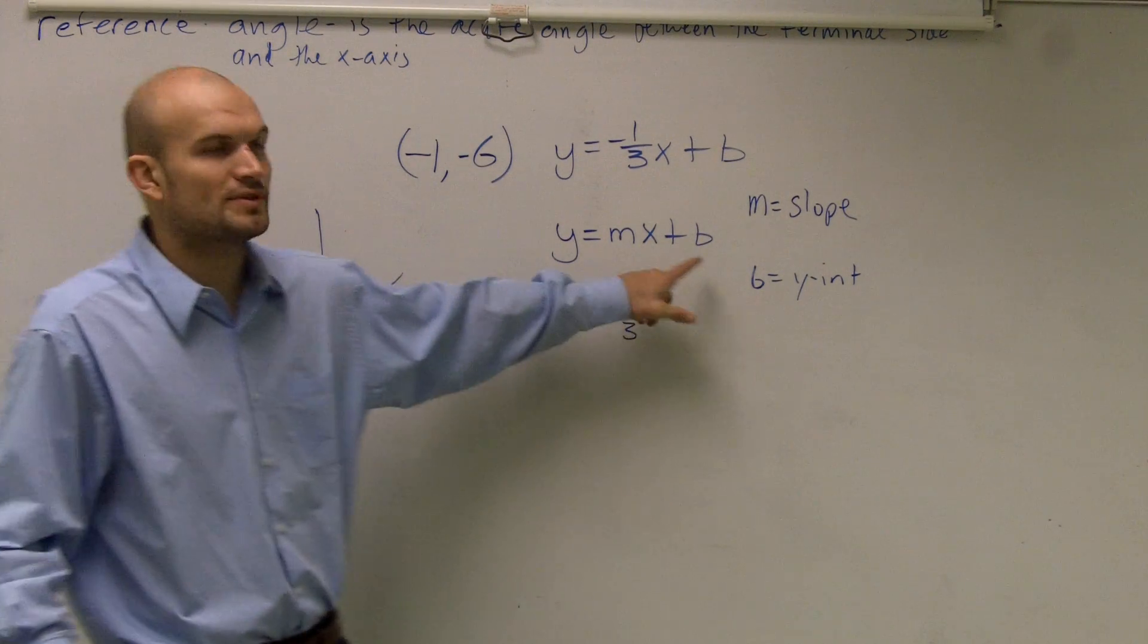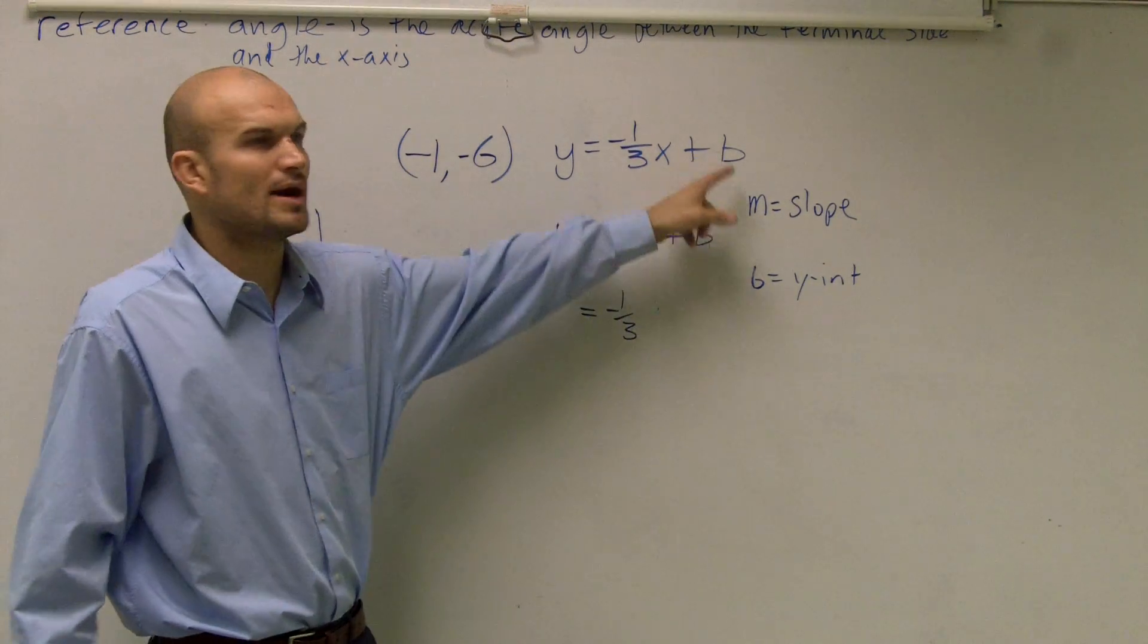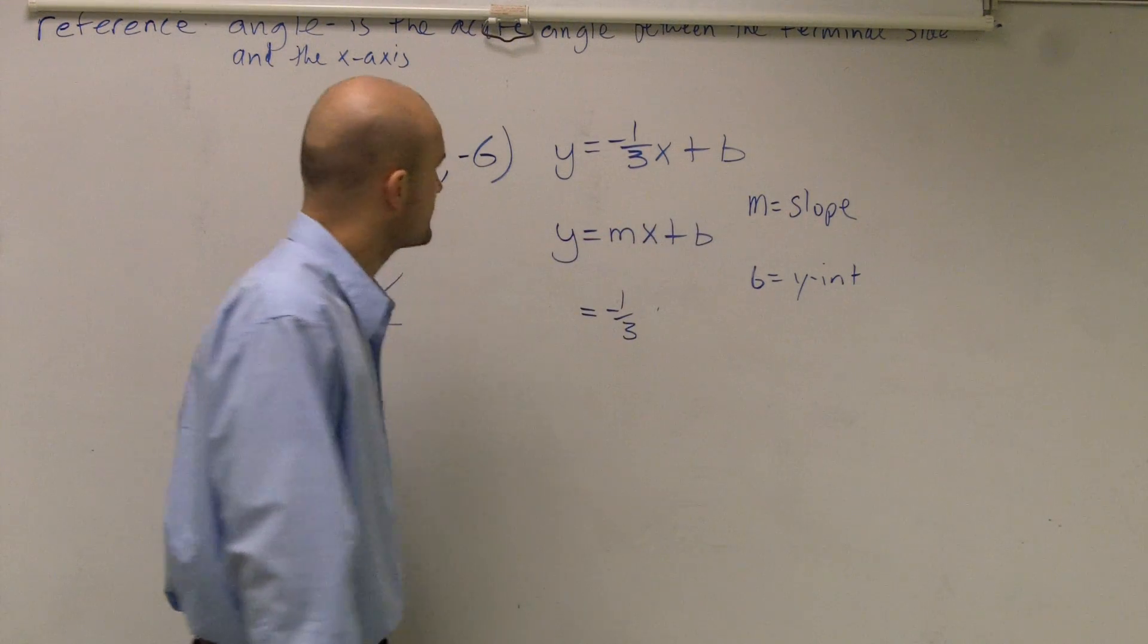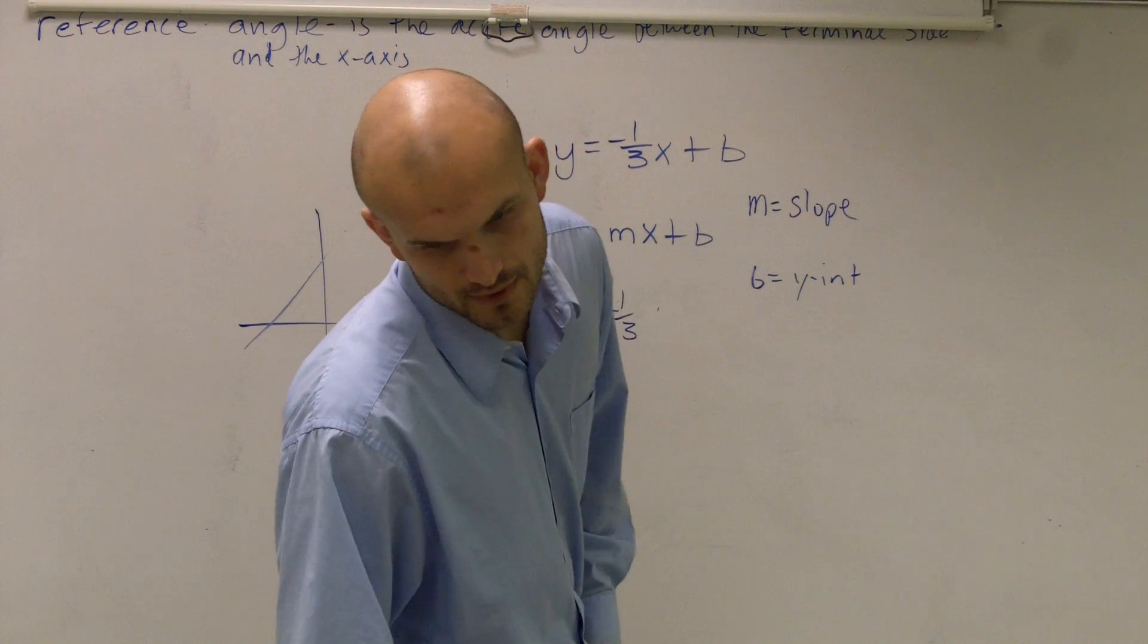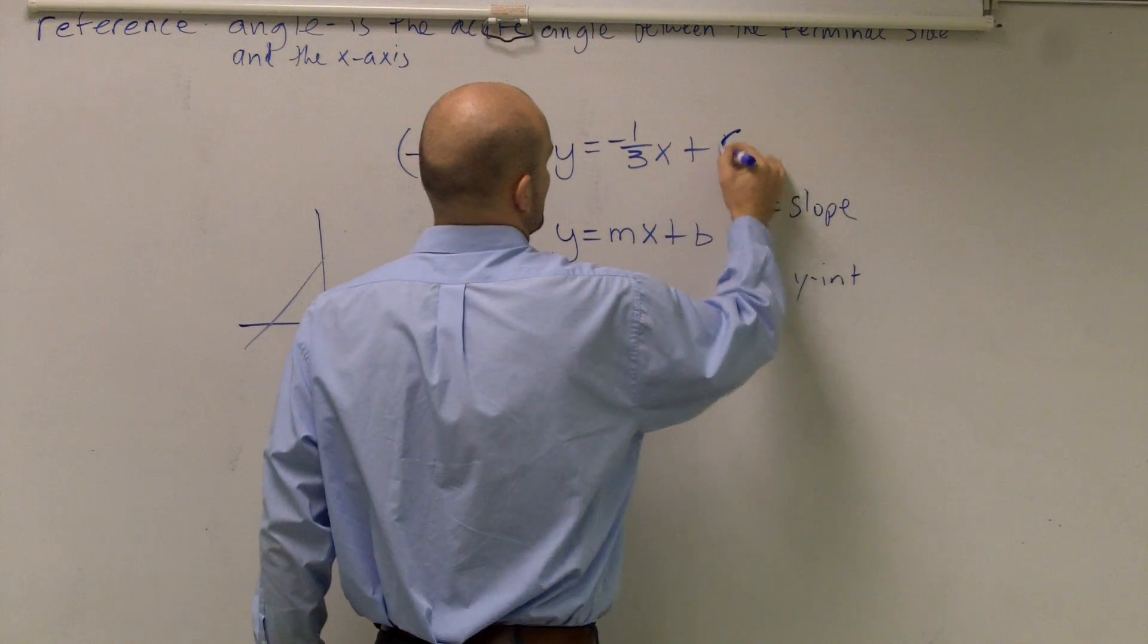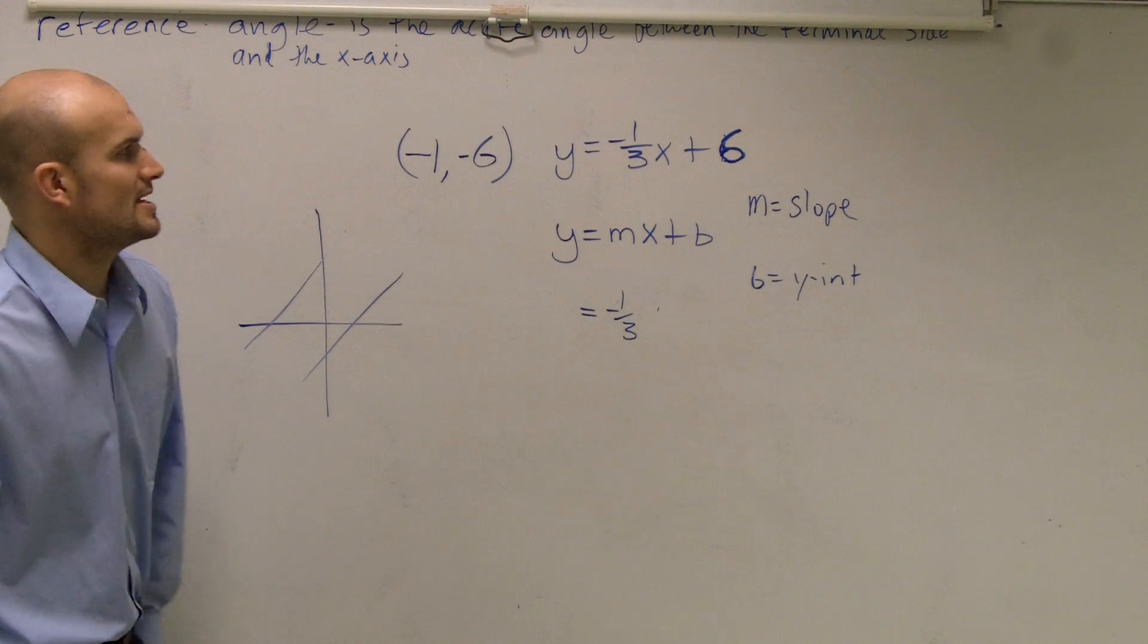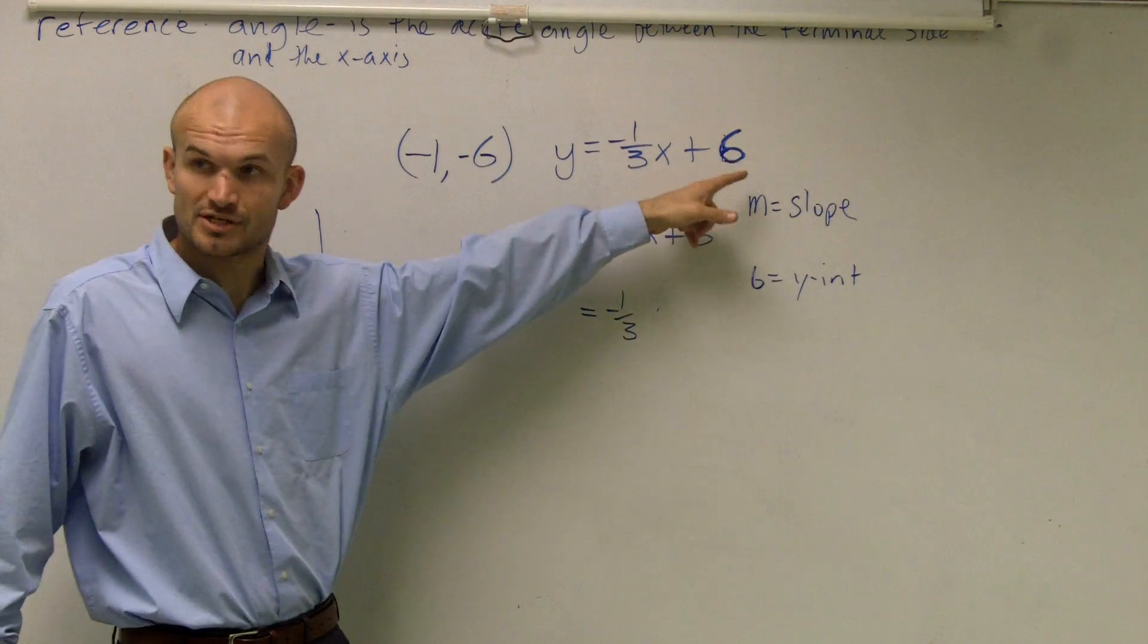Then the next thing is, do we know what the Y-intercept is? Now, this is where a lot of students make their mistake. And they say, oh, the Y-intercept is, oh, I didn't even write it, the question 1 was. What's your problem? Say, Y-intercept is 6. So a lot of students say, well, the Y-intercept is 6. Well, you're right. The Y-intercept for this equation is 6.